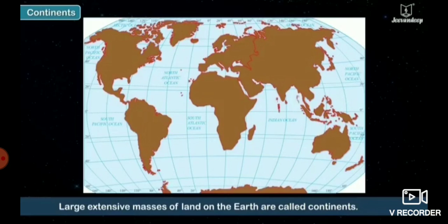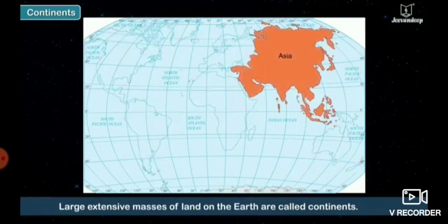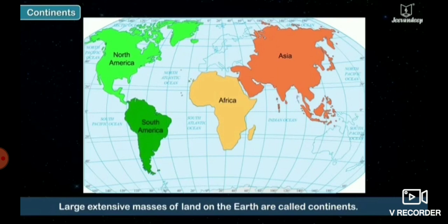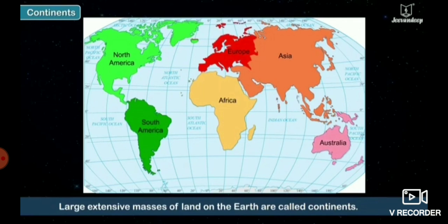Large, extensive masses of land on the earth are called continents. Asia, Africa, North America, South America, Europe, Australia, and Antarctica are the seven continents on the earth.